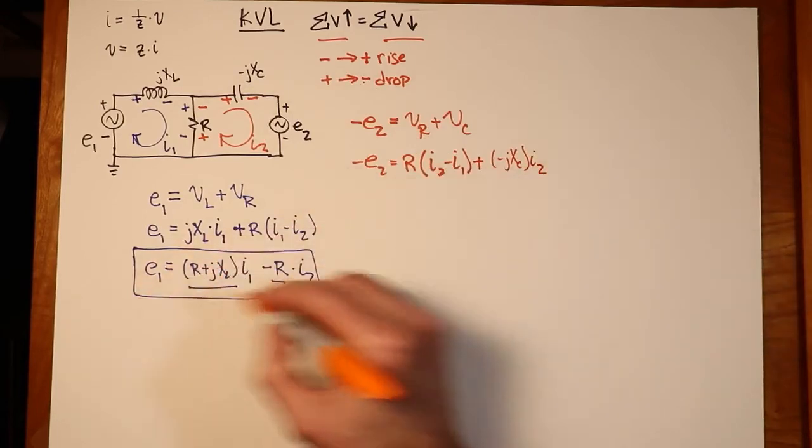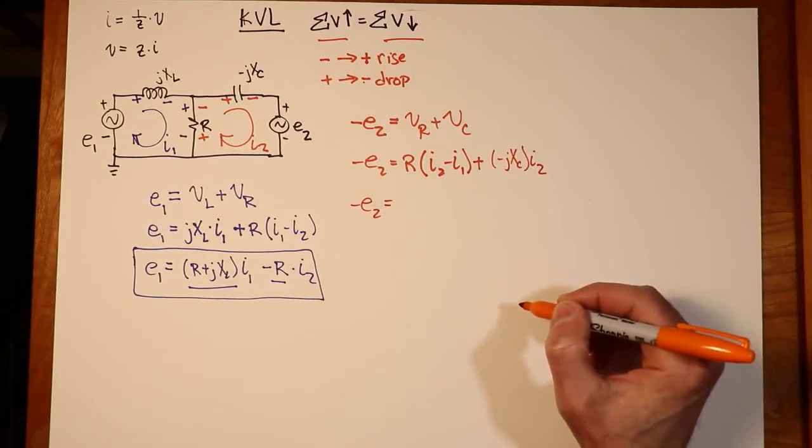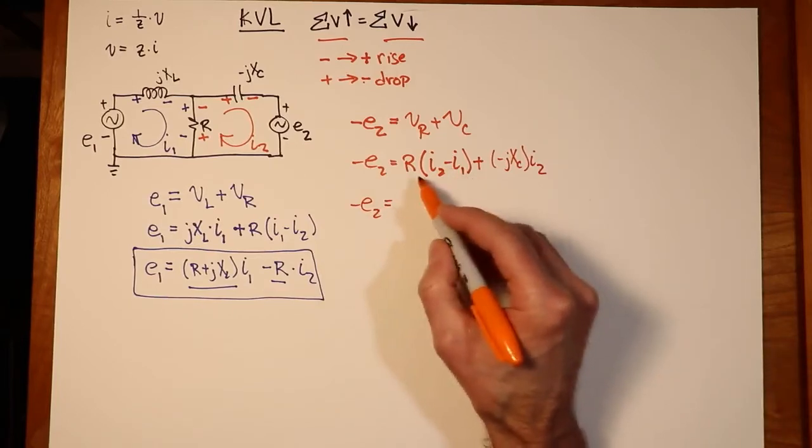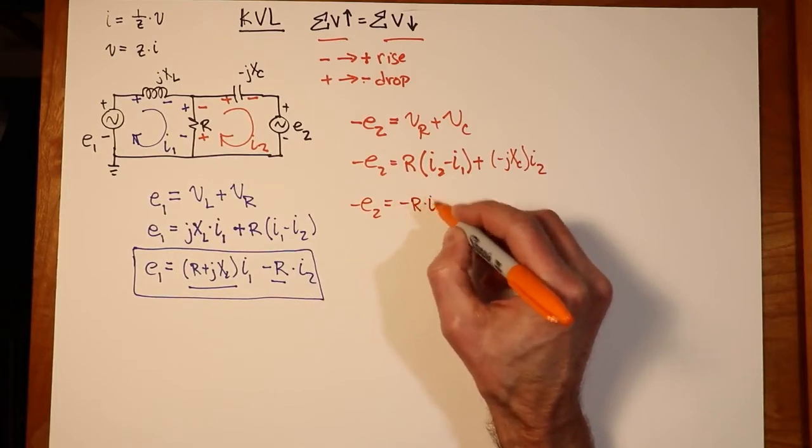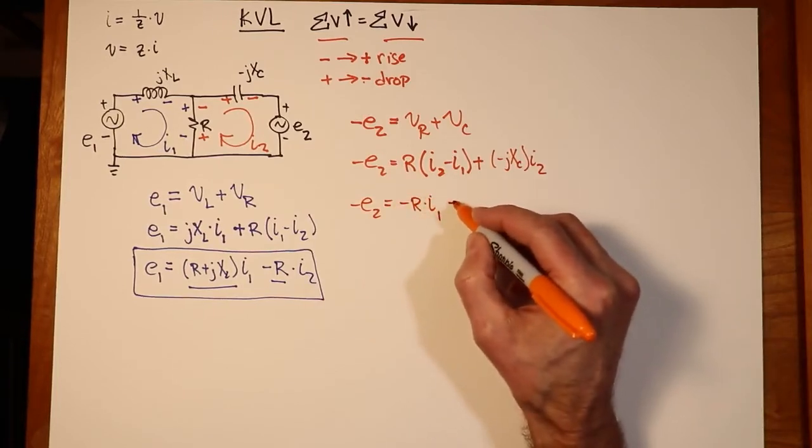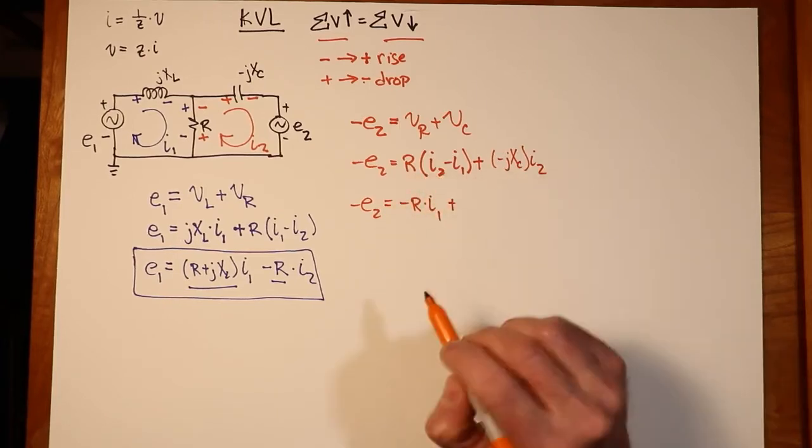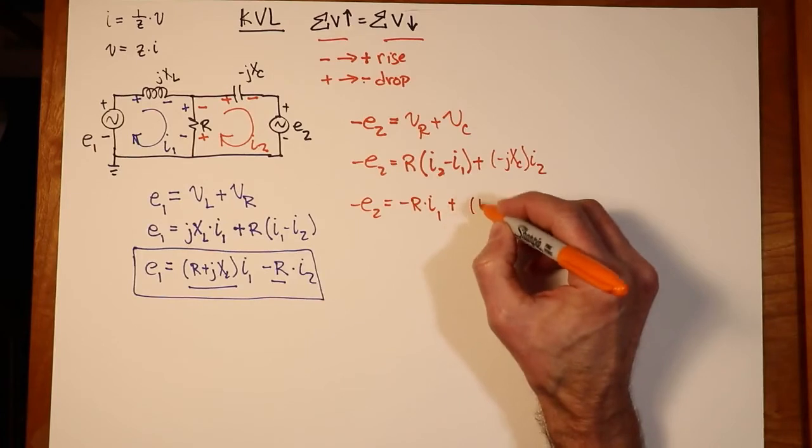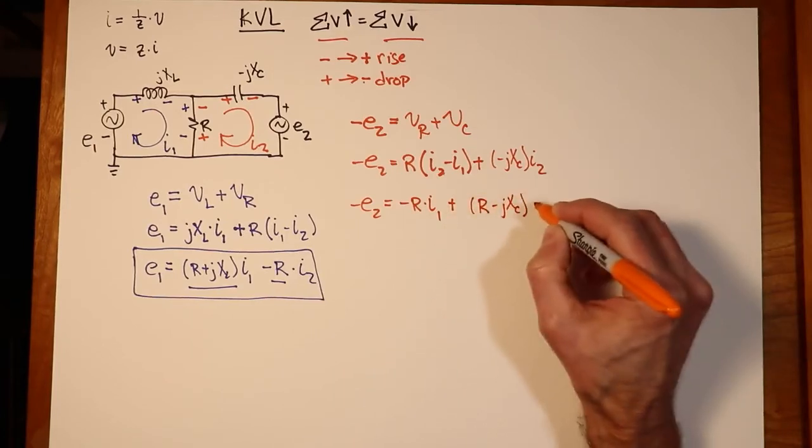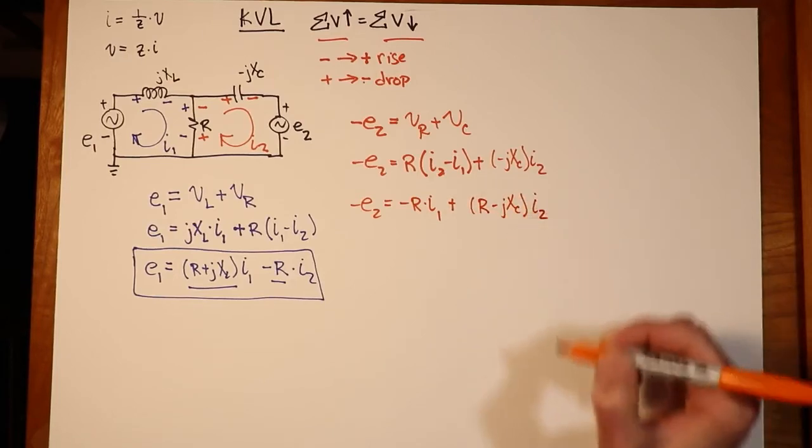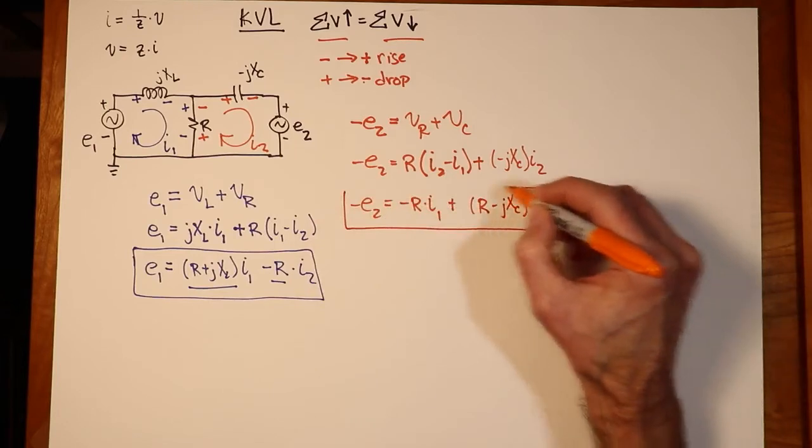We're going to do the same thing, gather up our various terms. My I1 terms, I only have the one. I got a negative I1R, so I've got a negative R times I1. And my I2 terms, I've got an R and I've got a negative JXC. So we'll stick those together. R minus JXC times I2. That's my second equation.